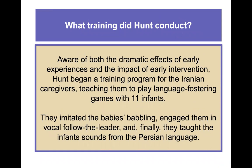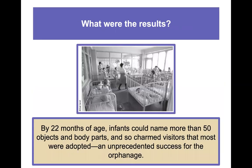Researcher Jay McKibber Hunt observed that the typical child in a destitute Iranian orphanage could not sit up unassisted at age two or walk at age four — significantly delayed development. The little care the infants received was not in response to their crying or cooing, so the children developed little sense of personal control over their environment. Hunt began a training program for the Iranian caregivers, teaching them to play language-fostering games with 11 infants — imitating the babies' babbling, playing vocal follow-the-leader, and teaching sounds from the Persian language. By 22 months of age, infants could name more than 50 objects and body parts, and most were adopted — an unprecedented success for this orphanage.